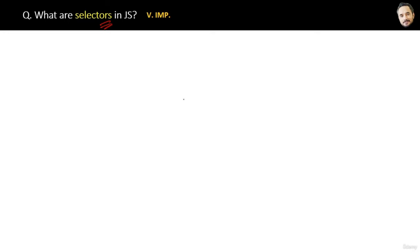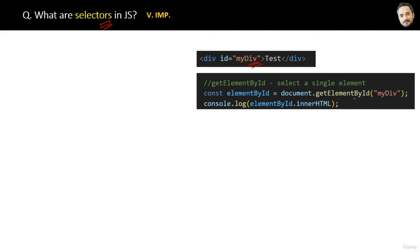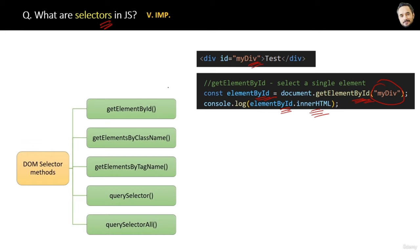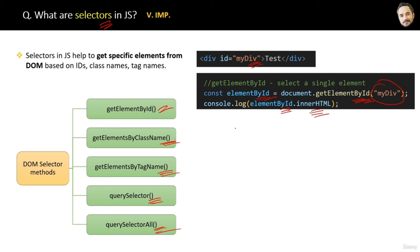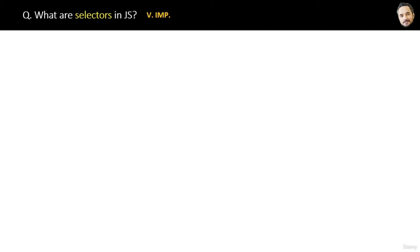What are selectors in JavaScript? Suppose you have a div element with id 'myDiv' in your HTML. The simplest selector is getElementById, which gets a reference to that element and assigns it to a variable. You can then use that variable anywhere in the program to access the element's properties. Similarly, there are four more selectors: getElementsByClassName, getElementsByTagName, querySelector, and querySelectorAll. Selectors in JavaScript help get specific elements from the DOM based on IDs, class names, and tag names.